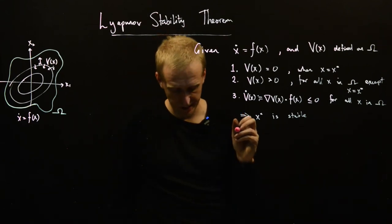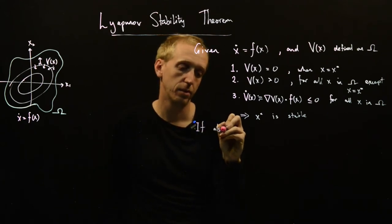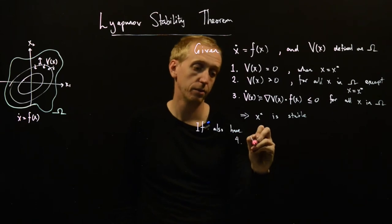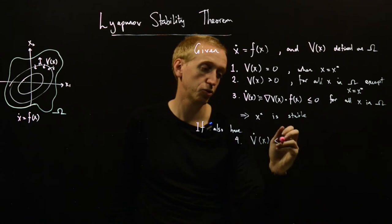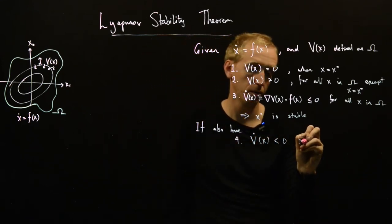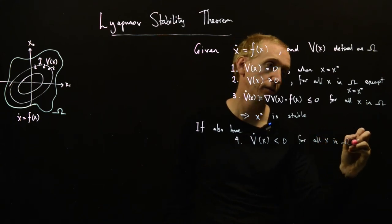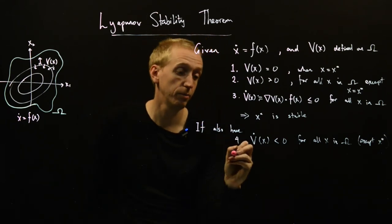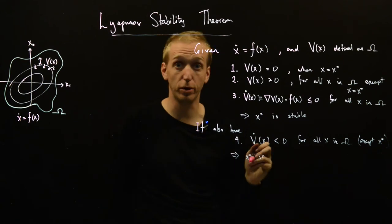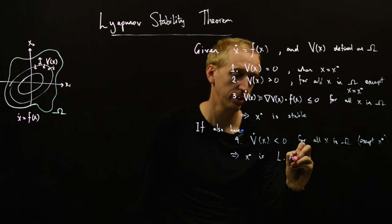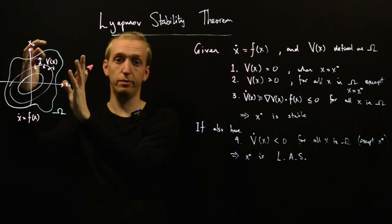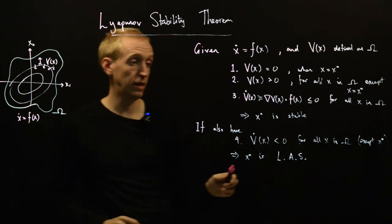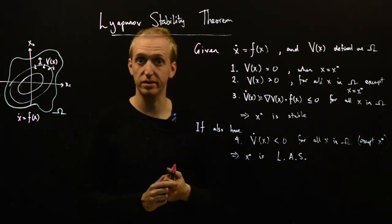And so how does this get strengthened? Well, if we also have condition four, V dot of x strictly less than zero for all x in omega, again except at x star, then x star is locally asymptotically stable. So locally asymptotically stable. And more than that, what this means is given our region omega, if we start in omega, we will stay in omega and will converge to our equilibrium point. So we actually get a region of attraction coming with this through our Lyapunov function.